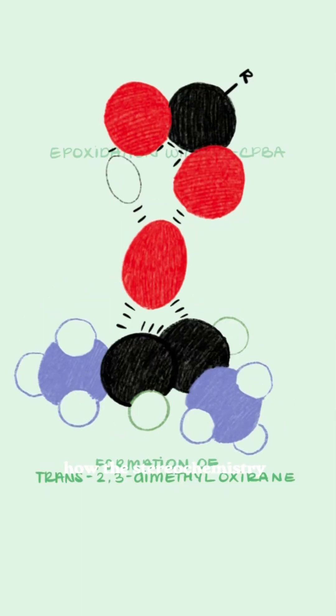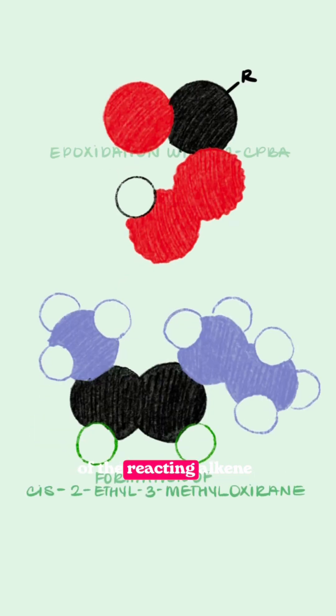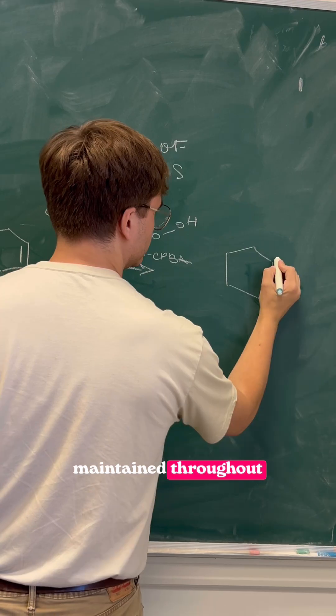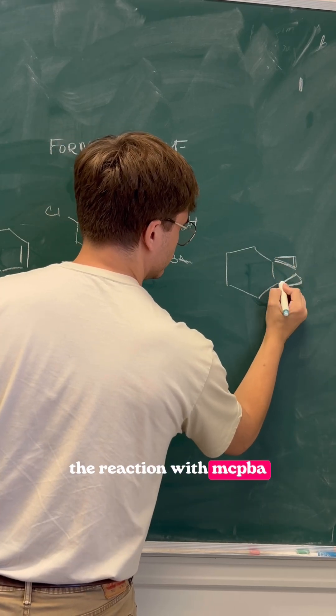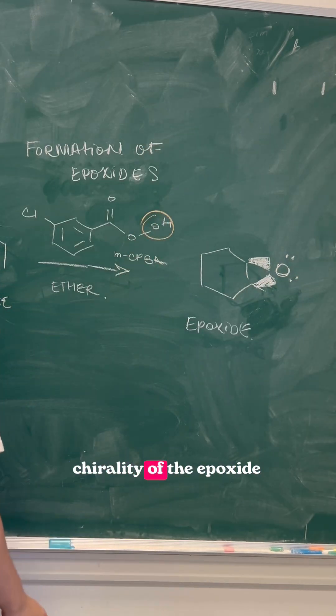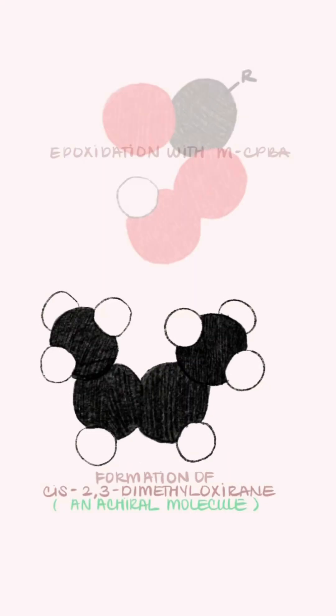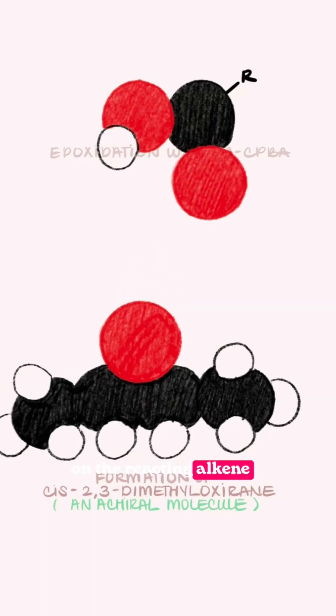In the last video, we saw how the stereochemistry of the reacting alkene is maintained throughout the reaction with MCPBA. Moving forward, we'll highlight how the chirality of the epoxide product is strictly dependent on the reacting alkene.